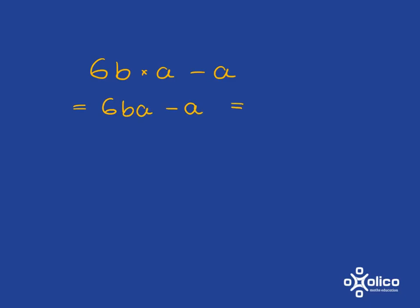And then most people like to, for conventional algebra, put their letters in alphabetic order. So instead of saying 6ba, it's just a bit prettier to say 6ab minus a.